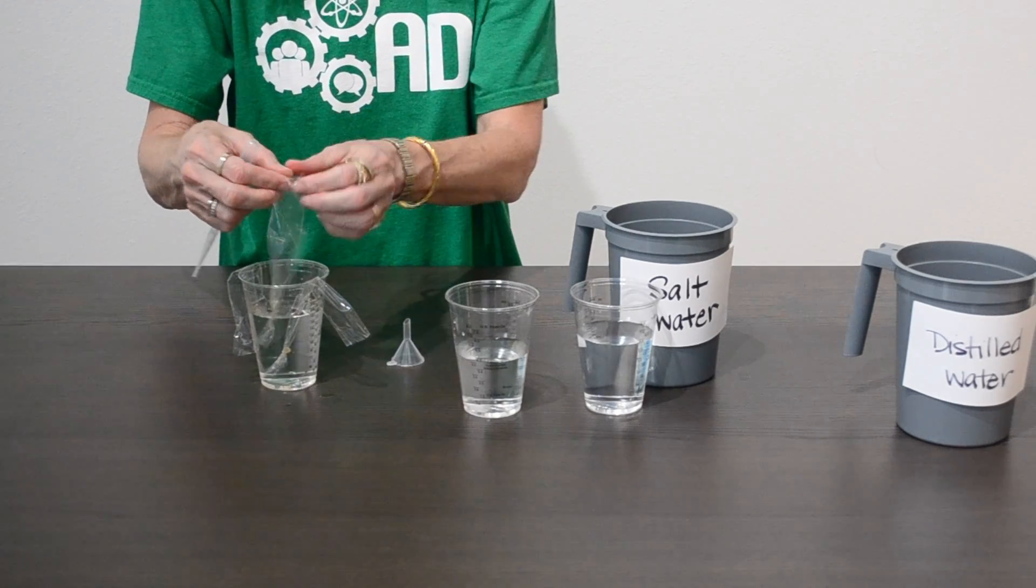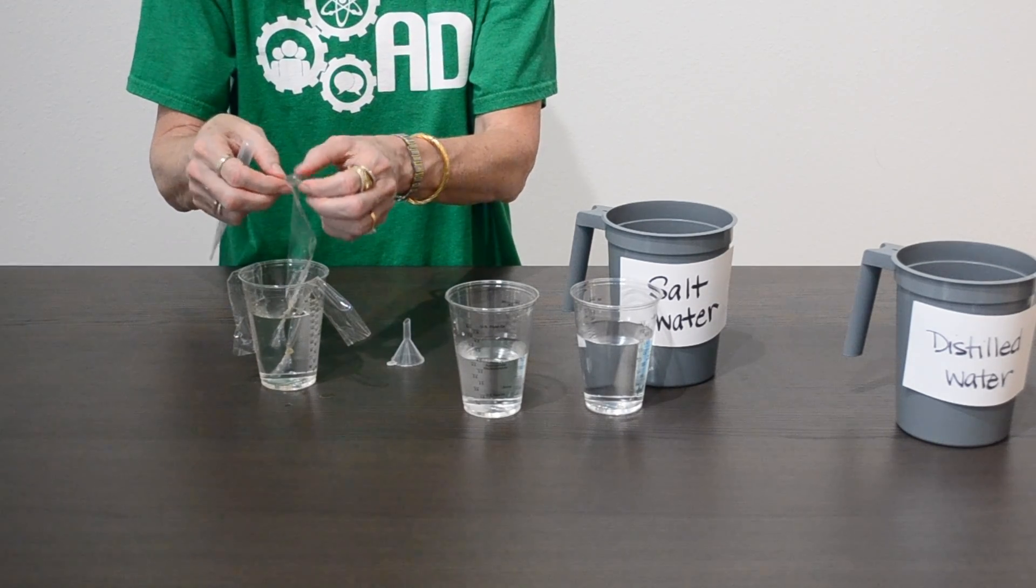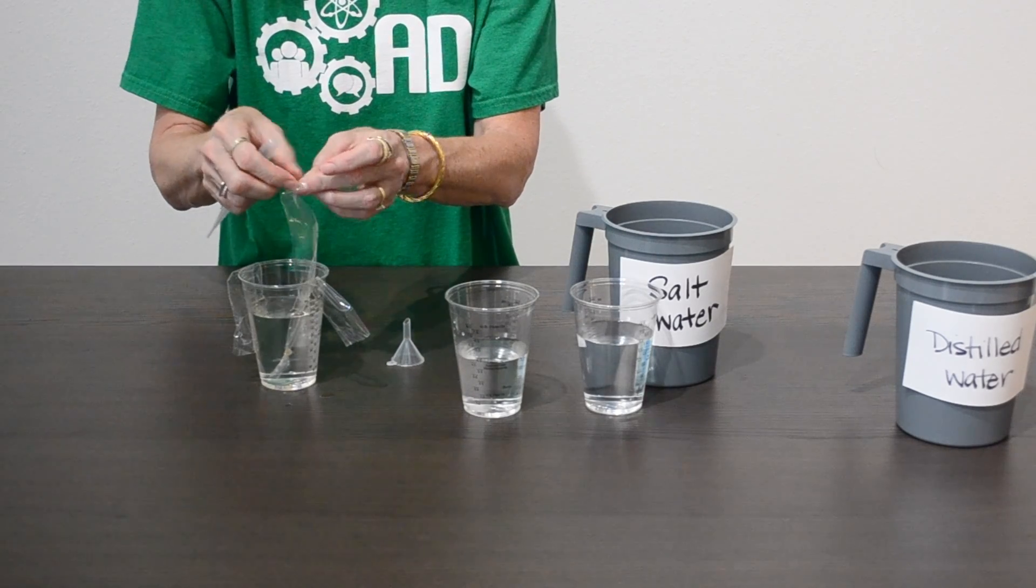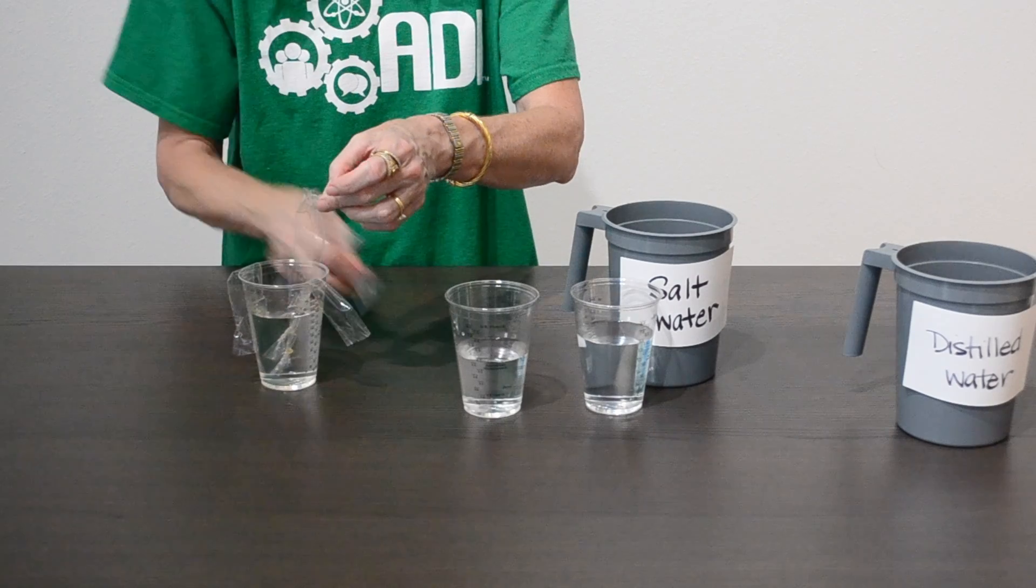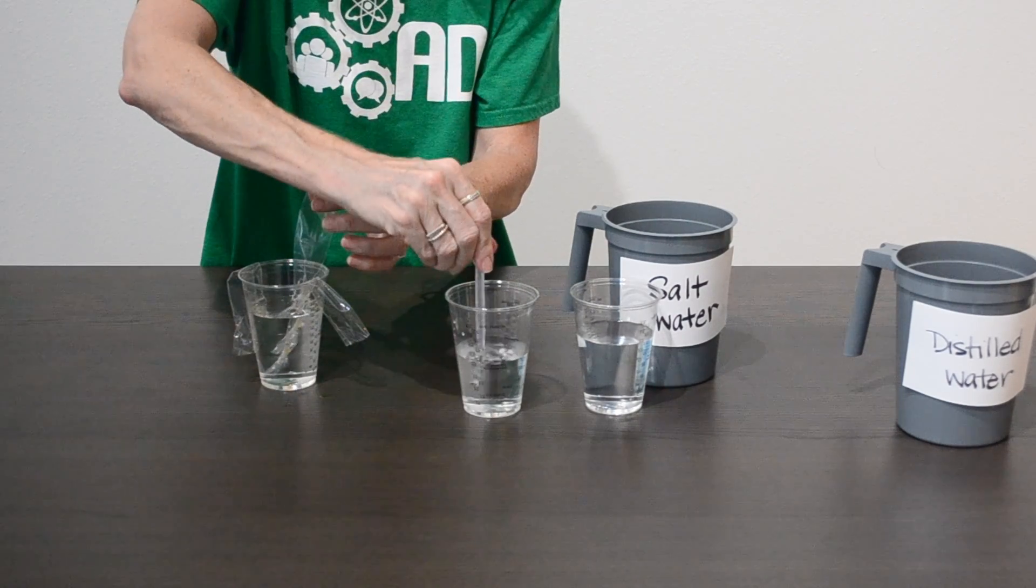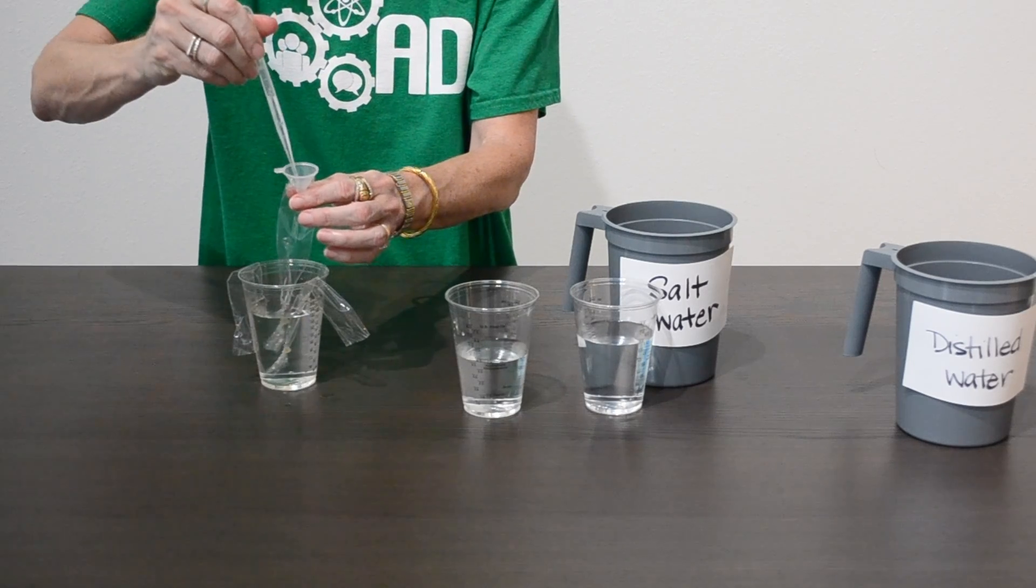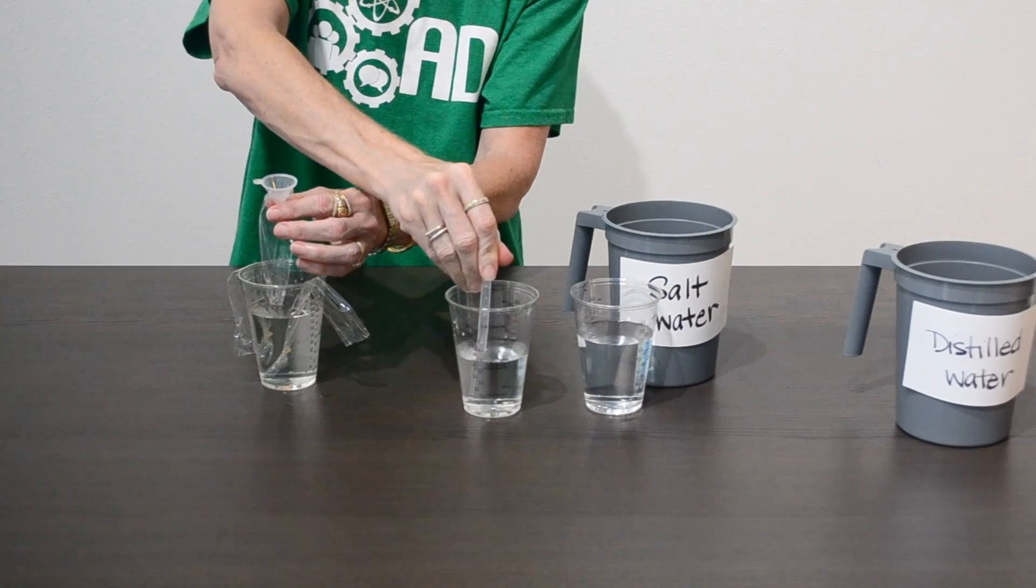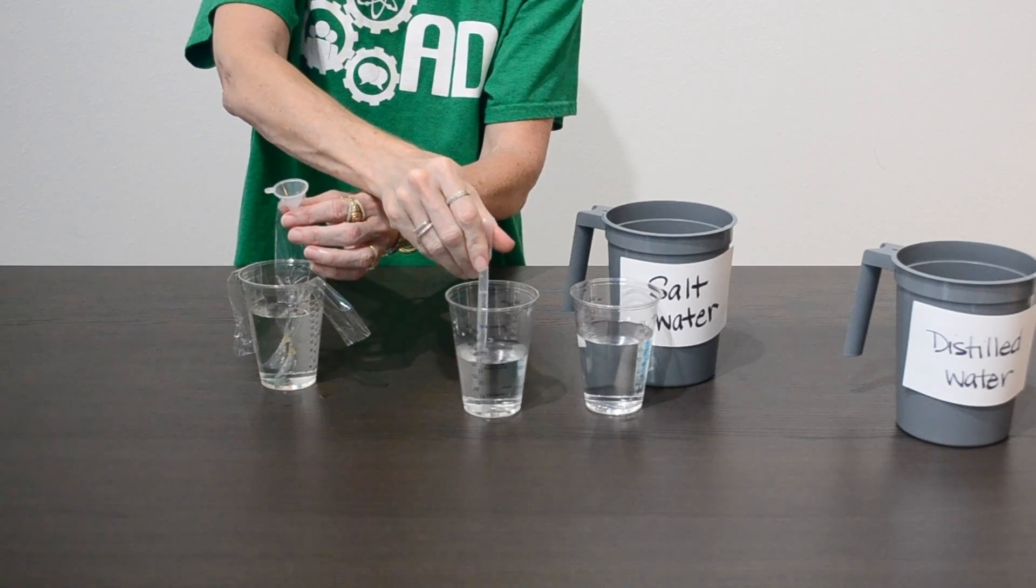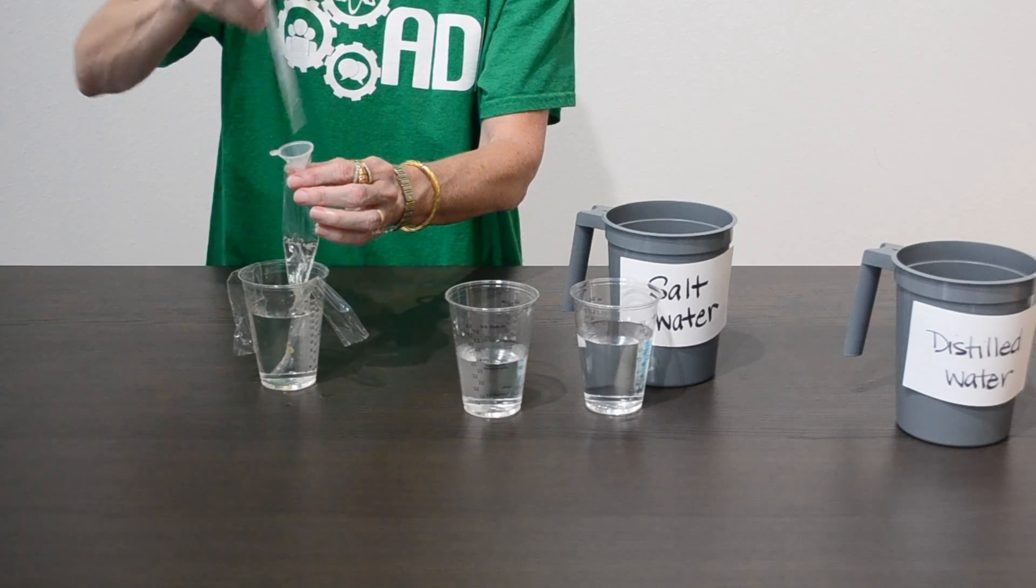Take one of the pieces of dialysis tubing and go ahead and work that end back open. It is a little sticky sometimes. Some people find it useful to use a small funnel to help hold that open. You're just going to put in enough distilled water to create a nice cell, keeping in mind that you will need quite a bit of an end to tie that second knot.